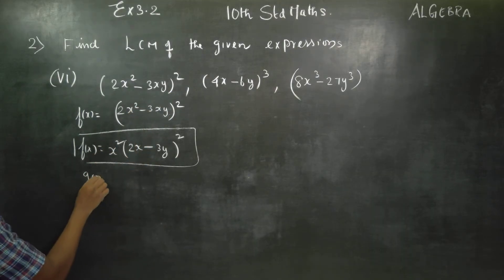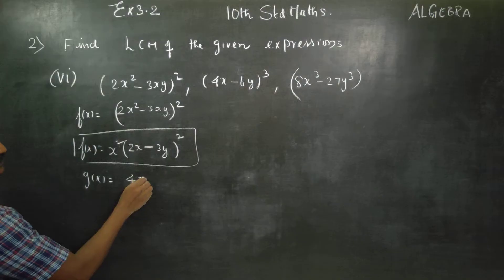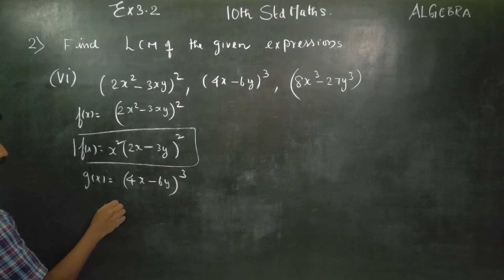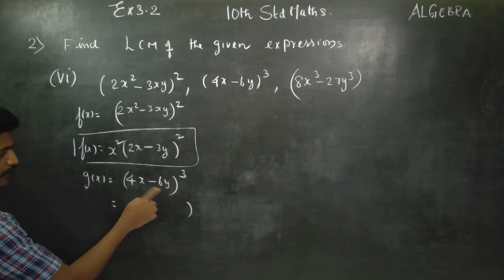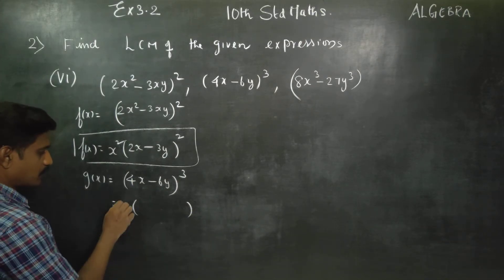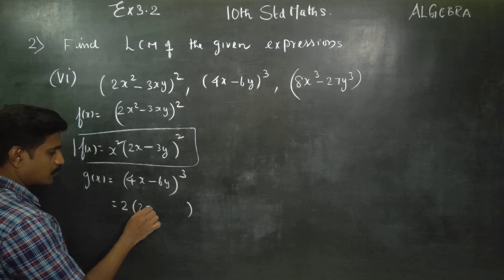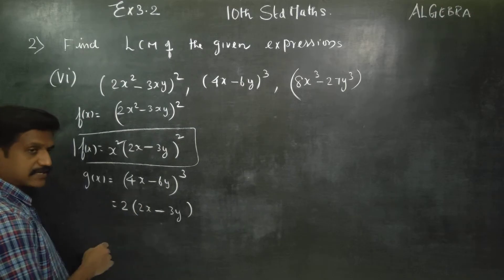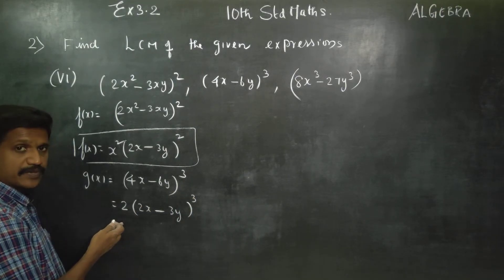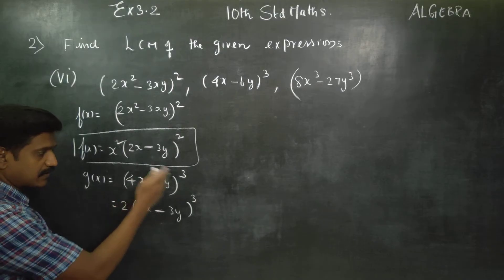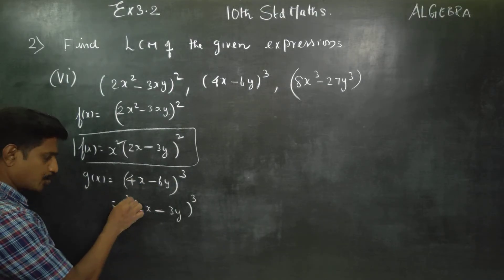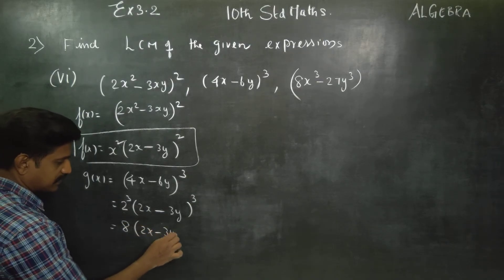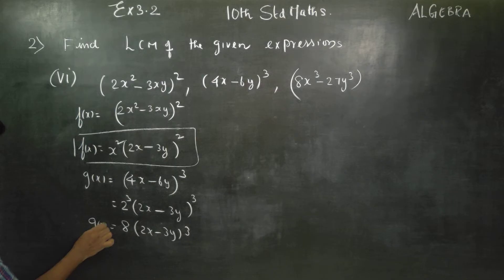g of x is the same: 4x minus 6y, 3 cube. The cube is the same. 2 cube is the same — 8 is the same. 2x minus 3y. This is g of x.